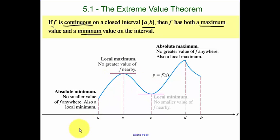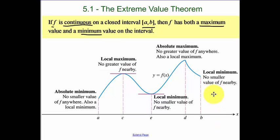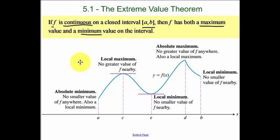Both of those would be considered a local maximum and a local minimum. Your derivative still equals zero, but it's not the highest or the lowest point. Now, at an endpoint, that's technically a local minimum — there's no smaller value of f(x) nearby. So that's kind of the conceptual idea of maximums or minimums, and you've talked about that in pre-calculus.